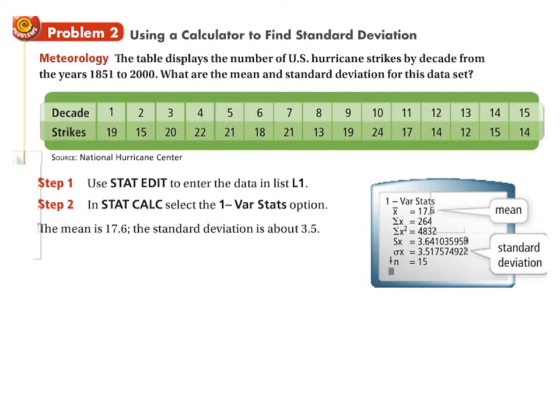Here is a set of data that displays number of U.S. hurricane strikes by decade from 1851 to 2000 and we want to find the mean and standard deviation for the data set. So rather than doing this by hand what we'll do is we'll use the stat function on the graphing calculator. So you go to stat and then edit and you enter in the data into list 1. Now we don't need the decade numbers just the number of strikes so you'll enter in that data. Again you can feel free to pause and do that. Once you do that you go to stat then over to calculate and you pick the one variable stats option.